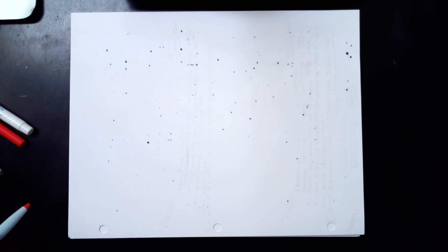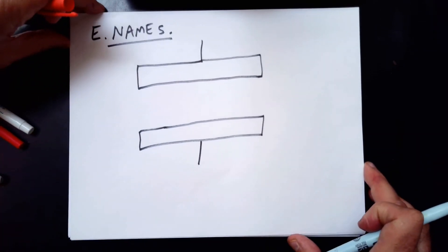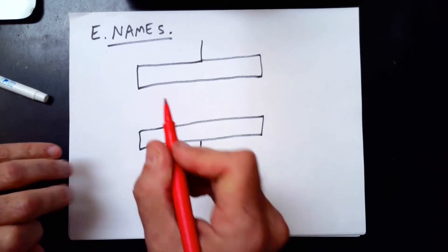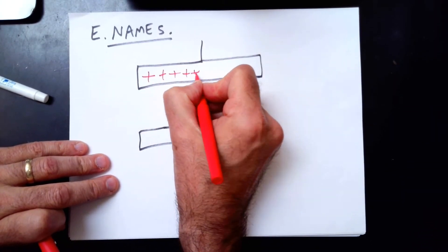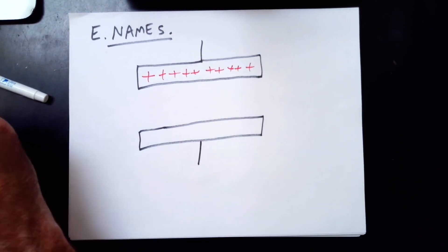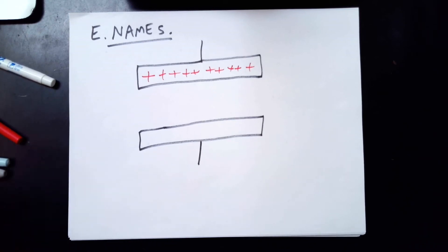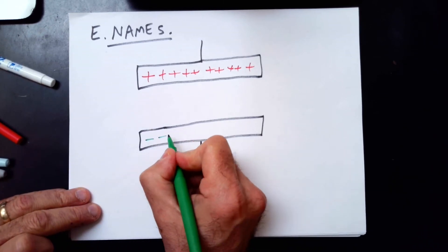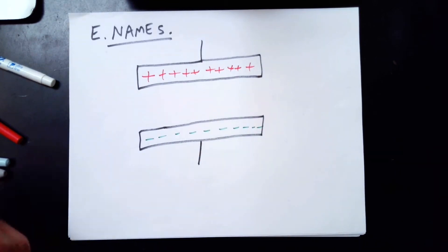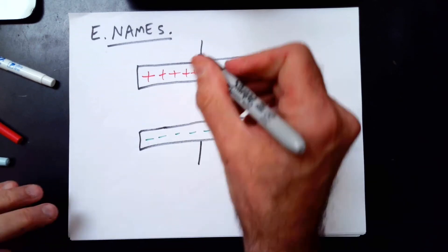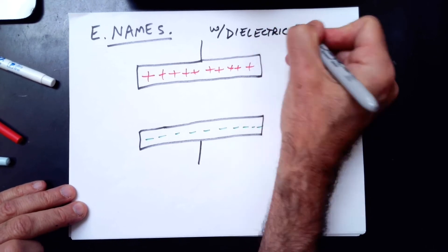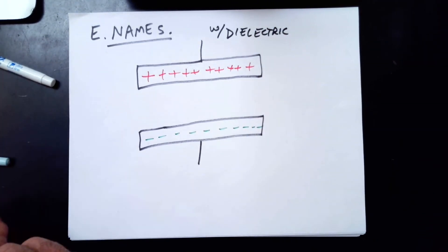So now some vocabulary. Here's our empty capacitor. We had 10 charges on the plate. That means 10 positive on top and 10 negative on the bottom. And this is the capacitor with the dielectric.